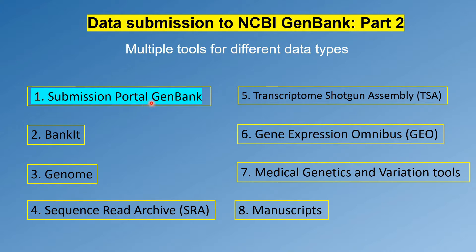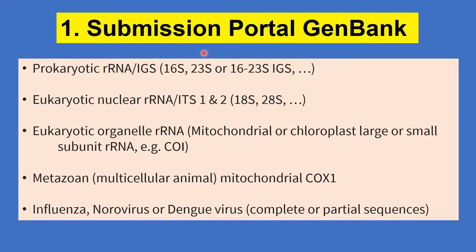In this slide I have listed the types of nucleotide data you can submit to the Submission Portal. First, you can submit prokaryotic ribosomal RNA or intergenic spacer region data such as 16S, 23S, or you can also submit the entire region from 16S to 23S. You can also submit eukaryotic nuclear ribosomal RNA sequence data such as ITS1 and ITS2.